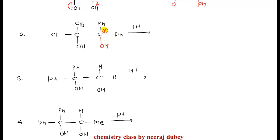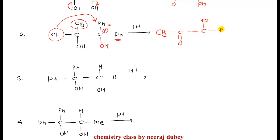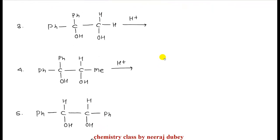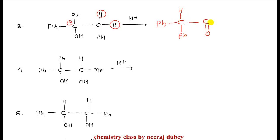The carbocation on this side will be formed because it is more stable — stabilized by two phenyl rings. Now here both CH3 and C2H5 are present. C2H5 has greater migratory aptitude, so migration of C2H5 takes place. Hydrogen migrates from here — both hydrogen atoms are present, either can migrate — so C2H5-OH is formed as the product. In the next example, the carbocation forms on the left side as it is more stable. Migratory aptitude: H and Me — H has greater aptitude, so H migrates.